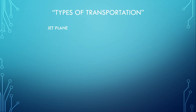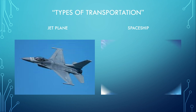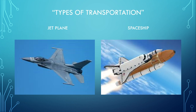We have in the air: the jet plane. As you can see, this is a jet plane. Next, we have spaceship. That is a spaceship.